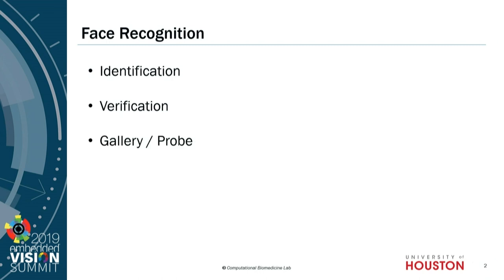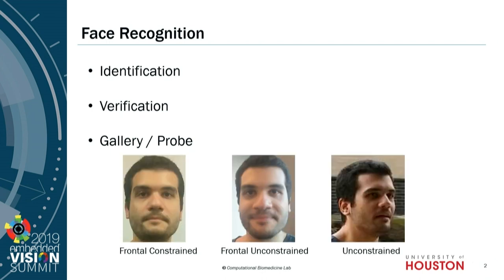Usually in the process, we talk about a gallery, which is a database of all the data that we are interested in, and a probe data set — the data set to which we want to assign a label. These data sets can include one image, many images, videos, or a mix. Without loss of generality, thinking about images, they can be frontal constrained images in a constrained environment for enrollment purposes, frontal unconstrained using selfies, or unconstrained in an outdoor evaluation scenario.